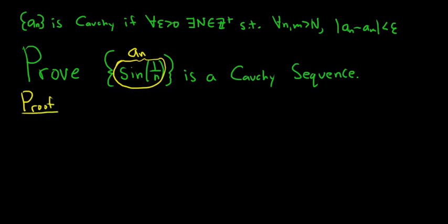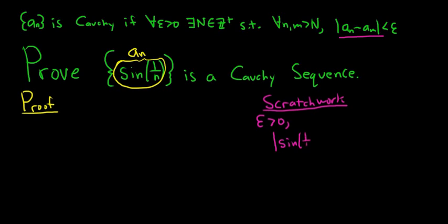Before we do the proof we have to actually figure it out, so I'm going to come over here and do the scratch work. We'll have epsilon greater than 0 and we'll need to find a capital N such that the distance is less than epsilon. The distance we're looking at is a_n, that's going to be sine of 1 over n, minus sine of 1 over m.